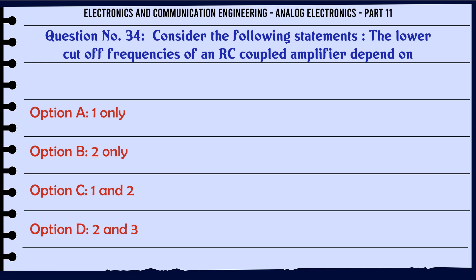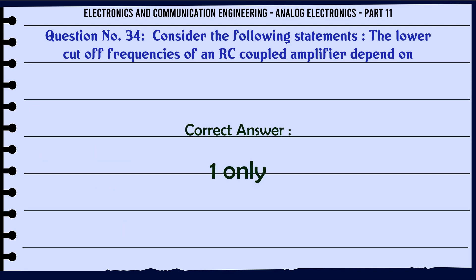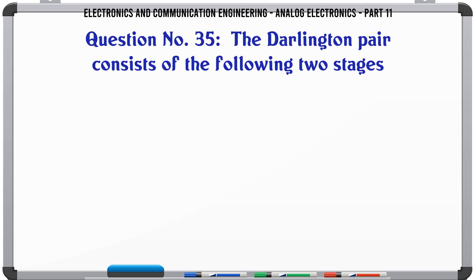Consider the following statements: the lower cut-off frequencies of an RC coupled amplifier depend on. A. One only. B. Two only. C. One and two. D. Two and three. The correct answer is: One only.